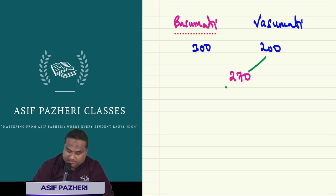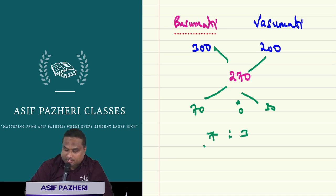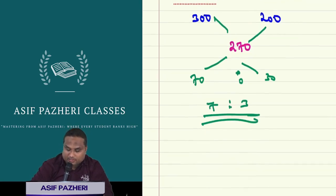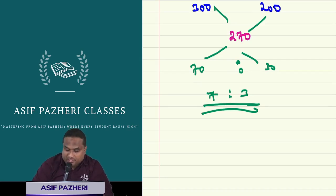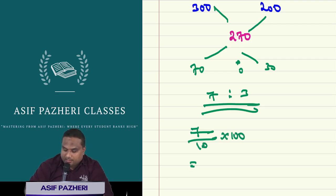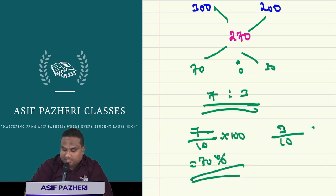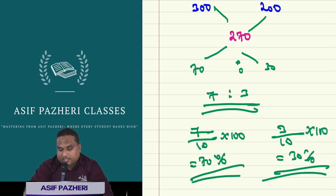The answer is 7 is to 3. Now if you are asking the percentage: 7 divided by 10 into 100 is 70 percent. And 3 divided by 10 into 100 is 30 percent.